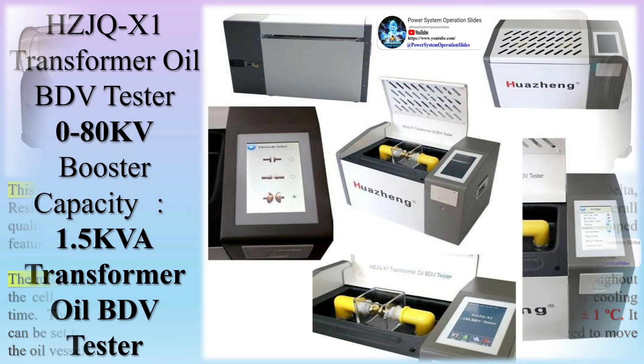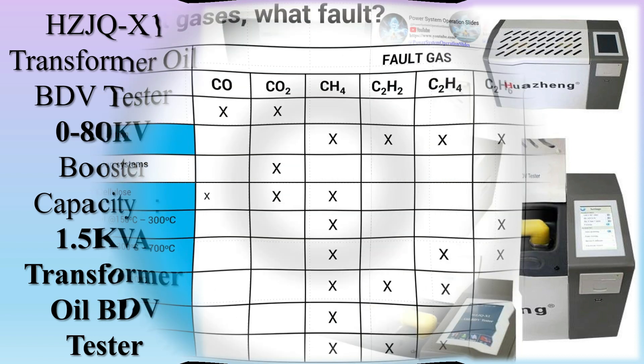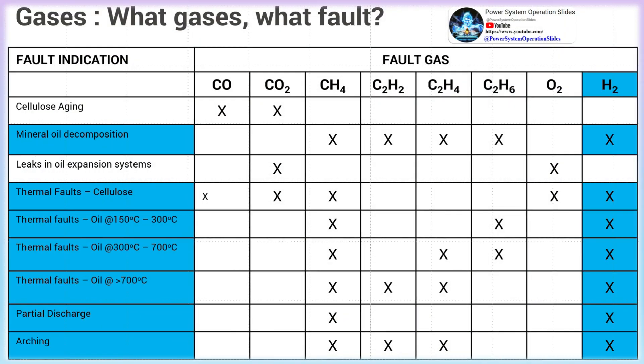Oil plays an important role in transformers' performance, acting both as an insulating material and a cooling agent. A failure in the oil may cause a severe fault in a transformer and lead to the total destruction of the equipment. For this reason, oil must be tested to verify the compliance of its chemical, physical, and electrical properties.